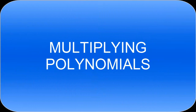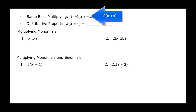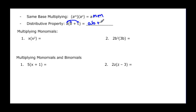This video is going to talk about multiplying polynomials. A couple of things we need to remember — our same-base multiplying property: a to the m times a to the n. Since the bases are the same, we add the exponents, giving us a to the m plus n. And the distributive property: you distribute the a to everything inside, giving you ab plus ac.